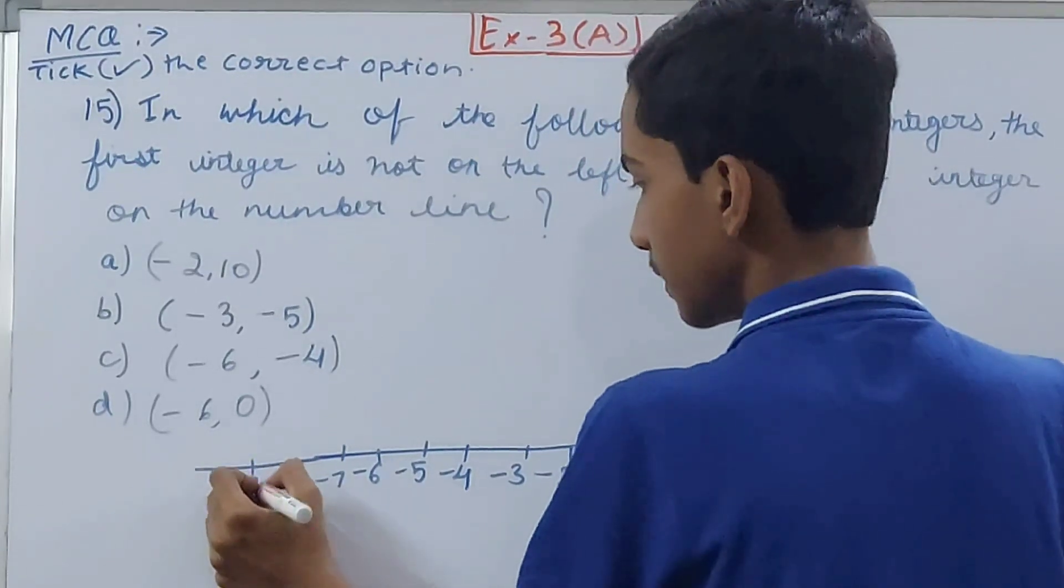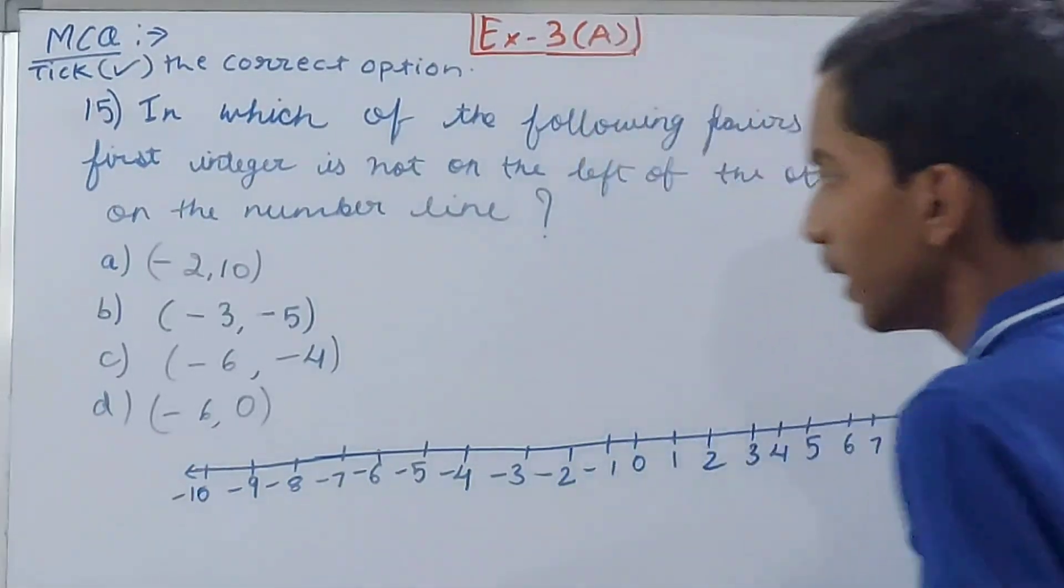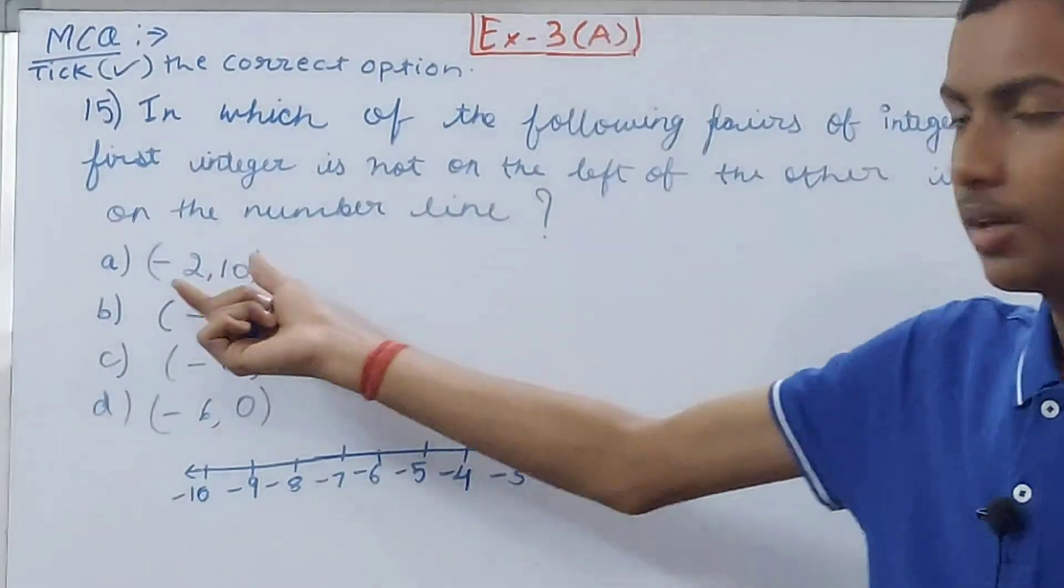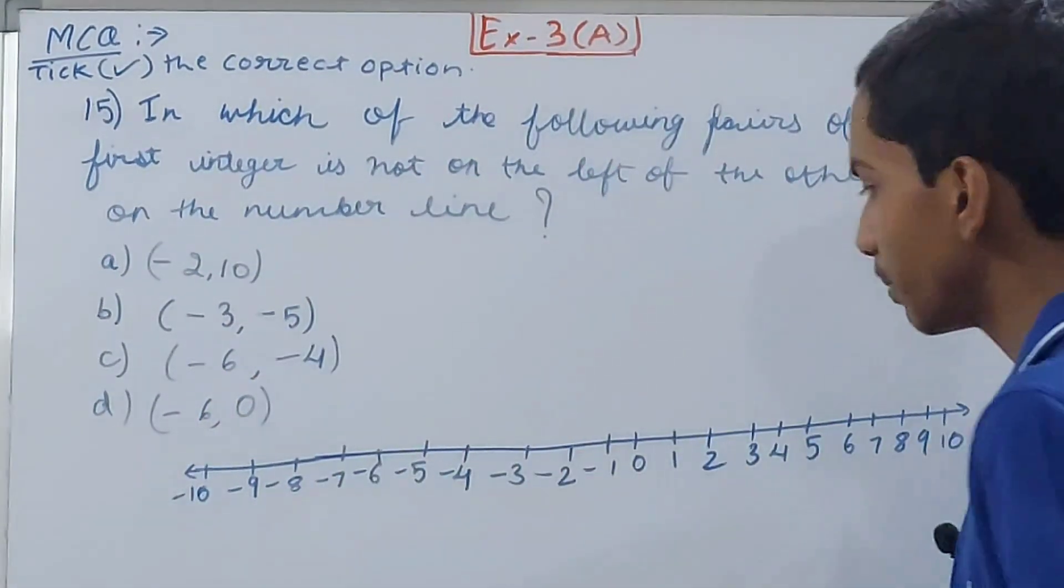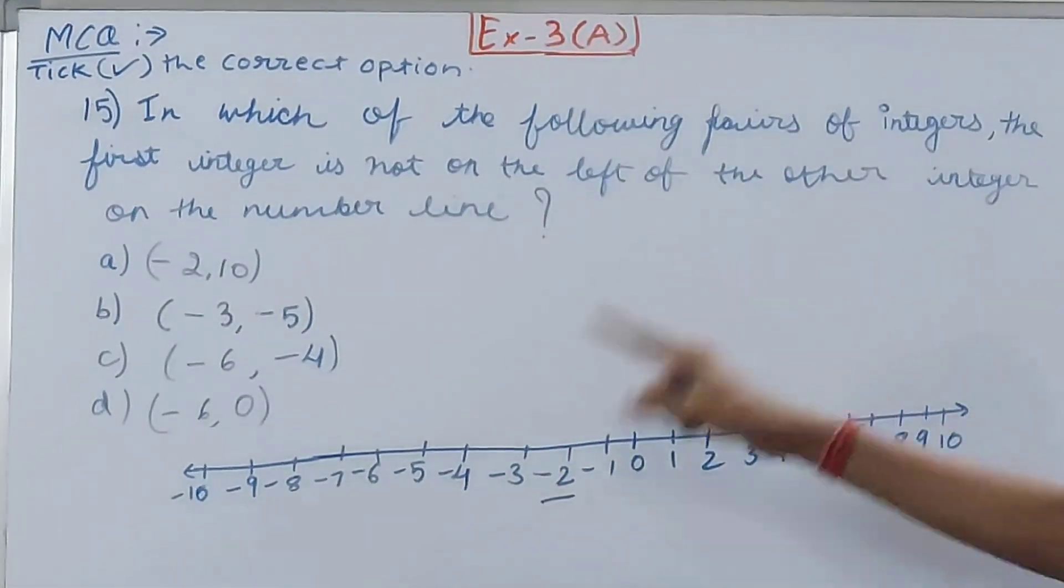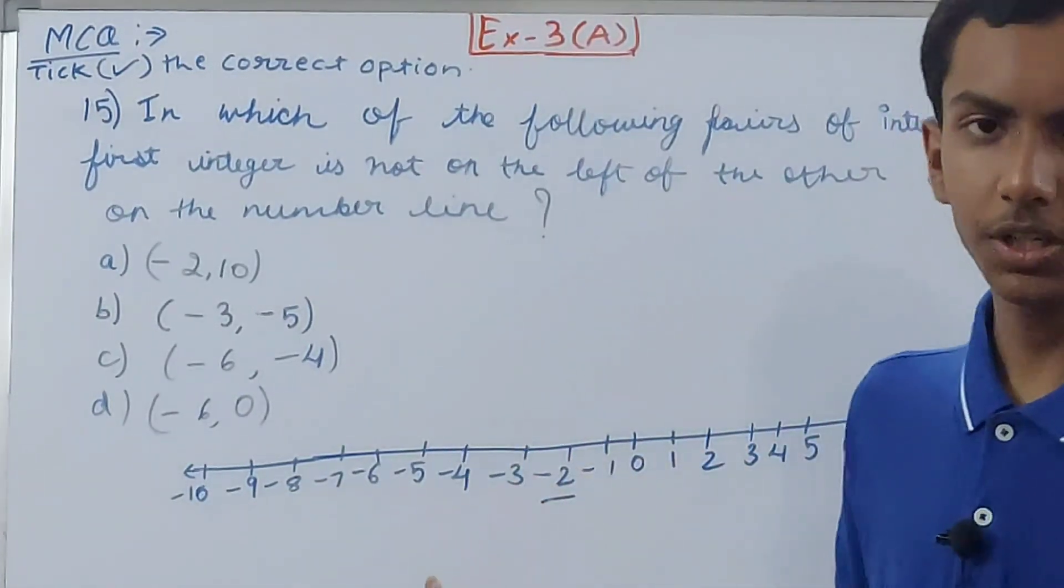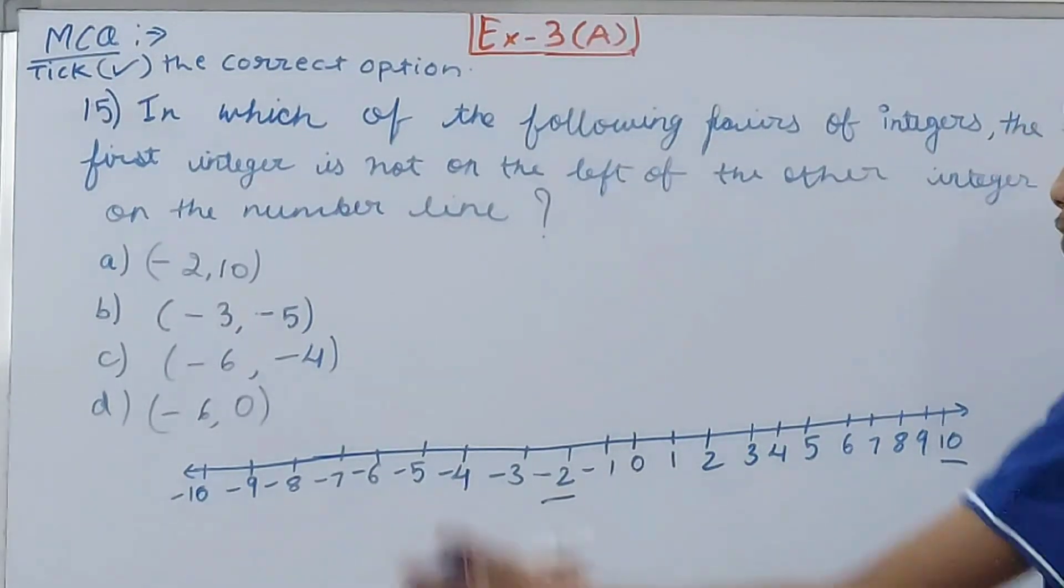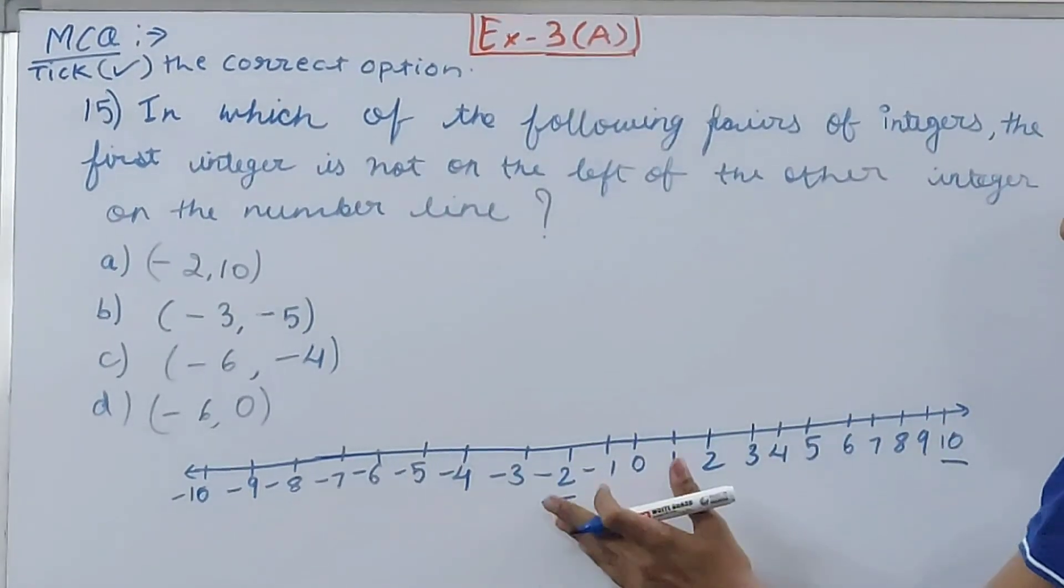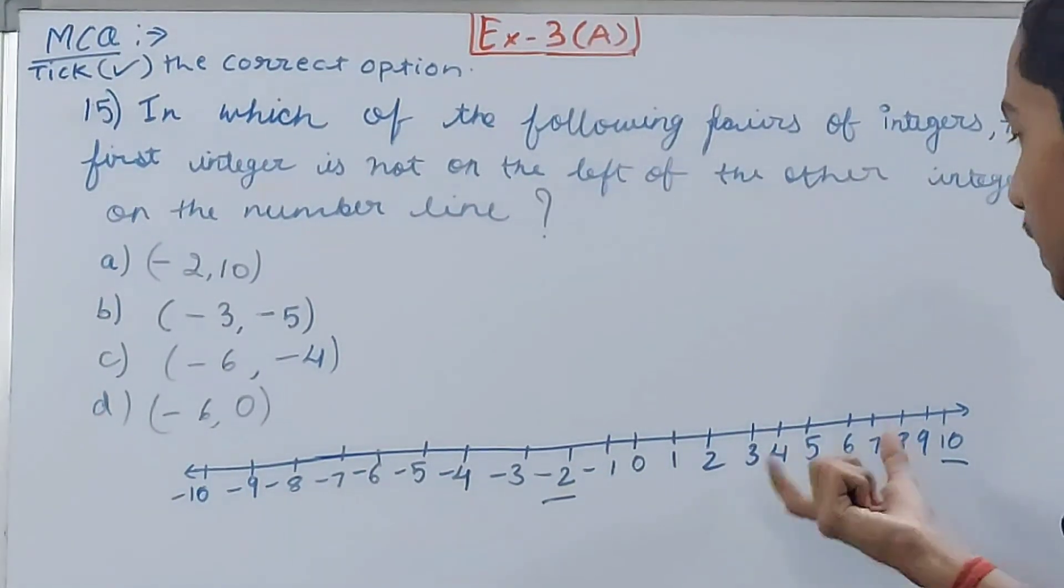Right, close that. Now see, first of all we have -2 and 10. Where is -2? Here is -2. And where is +10? Over here. So is the first integer to the left of the second integer on the number line? Yes it is, right? This is the second integer, and to its left only first integer is coming. That means this is not correct. So for it to be correct, it has to be not on the left side of the second integer.